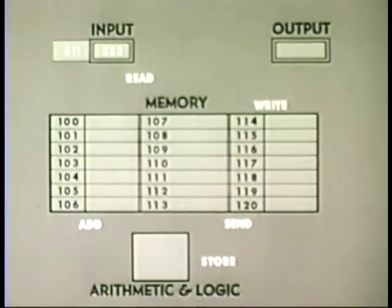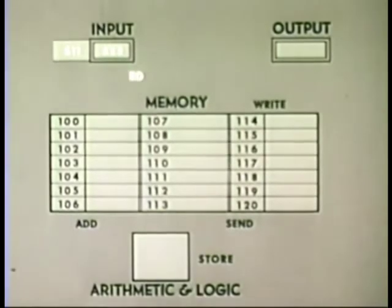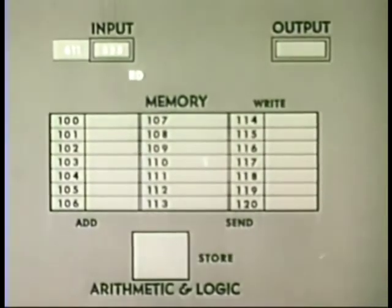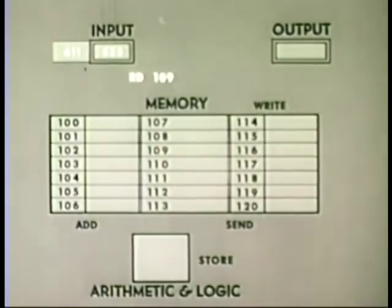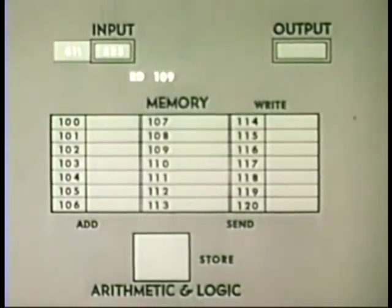Thus, for our present example, the first operation, which is read the first number into memory, will appear as RD. In addition, the complete instruction will include the memory address, which the programmer has designated for the storage of this number. In this case, location 109.